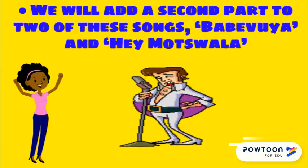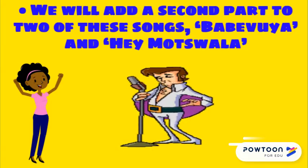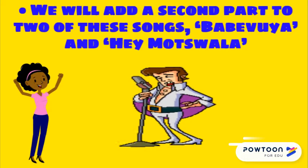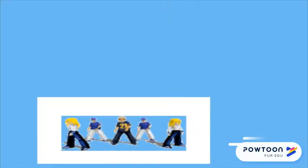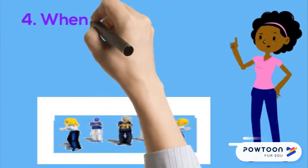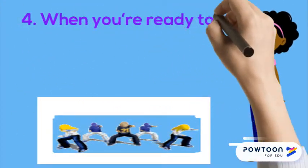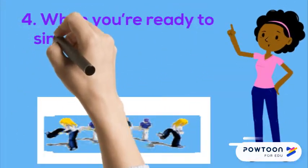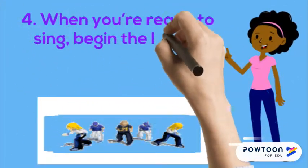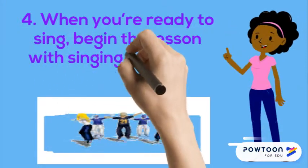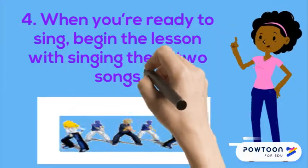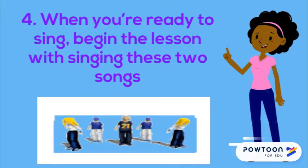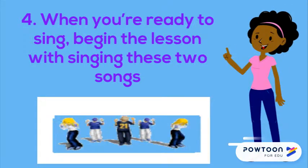The teacher will divide you into groups for the main melody and the alto part. When you are ready to sing, begin the lesson with singing these two songs. Make some actions while you sing these two songs.